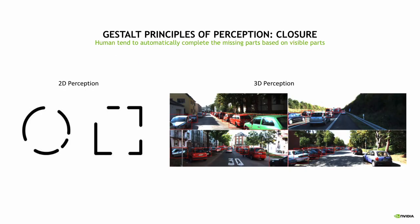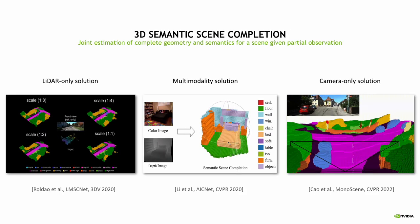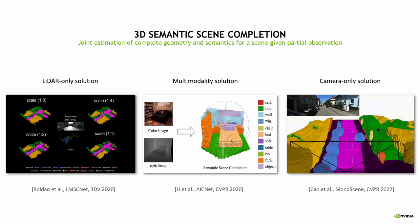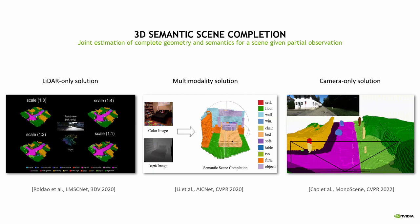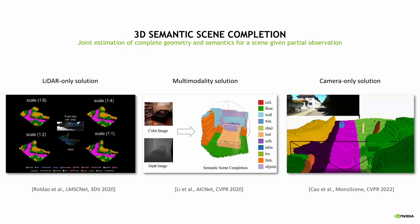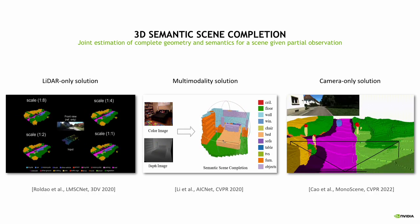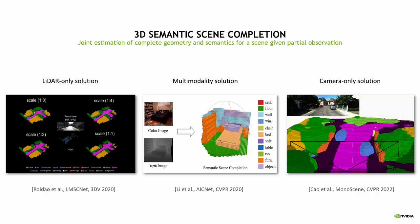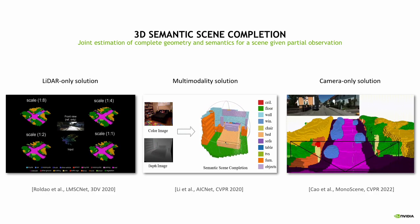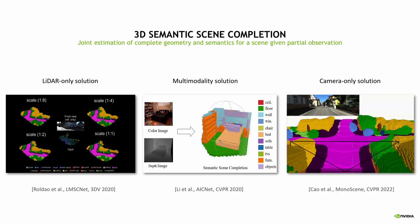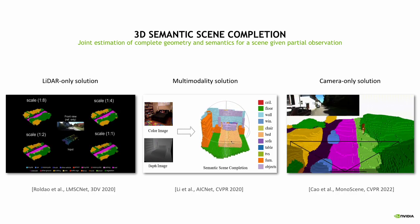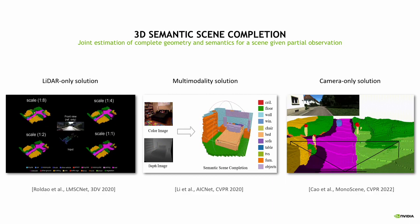As we all know, humans tend to automatically complete the missing parts based on visible parts, as shown in these 2D perception and 3D perception examples. In literature, 3D semantic scene completion is proposed to jointly estimate the complete geometric and semantic information, given only partial observations. Such partial observations could be either a sparse LiDAR scan or an RGB camera image. Due to the popularity and the low cost of the camera, in this work we investigate the camera-only solutions.